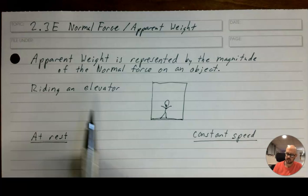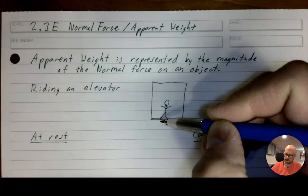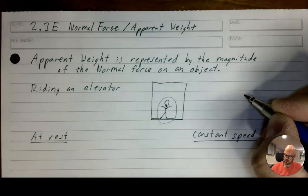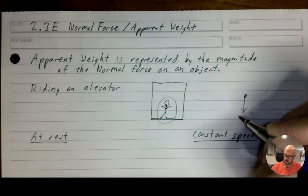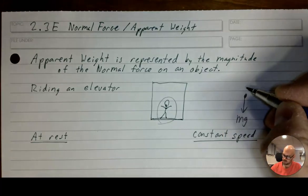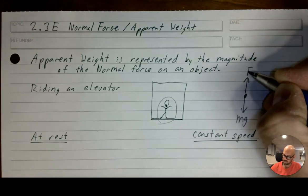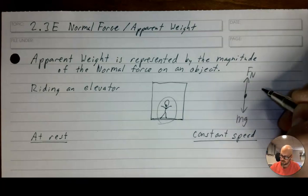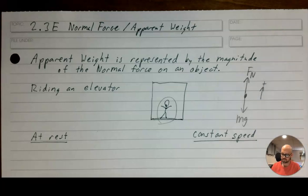We're going to use an elevator as our example. Here's a person in an elevator. When they are standing still in the elevator, there are two forces acting on them: their gravity force acting down, and then the normal force acting upward. We will always have up as the positive direction, and that's going to help us review kinematics.